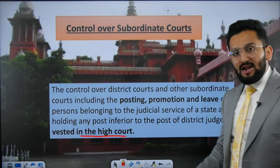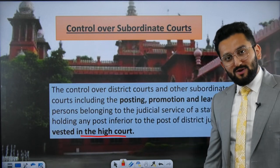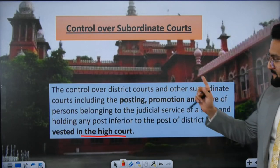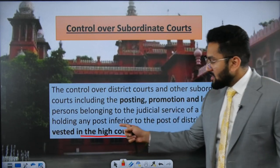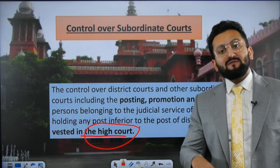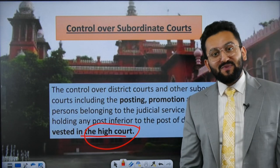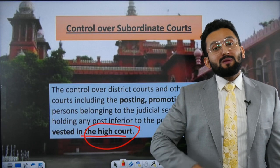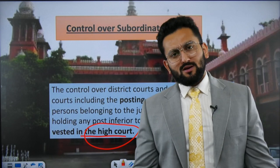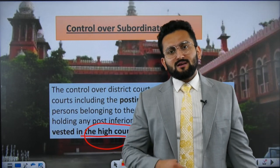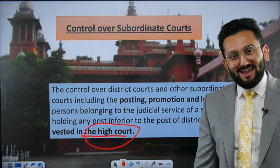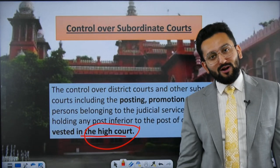Control over subordinate courts: the High Court has control, and the district judge at the district level has prime responsibility. Control over the district court and other subordinate courts — including posting, promotion, and leave of persons belonging to the judicial service of a state — all lies with the High Court. Supervisory jurisdiction over subordinate courts does not extend to the Supreme Court. The Supreme Court cannot be burdened with supervision of all districts — that is why supervisory jurisdiction rests only with the High Court.